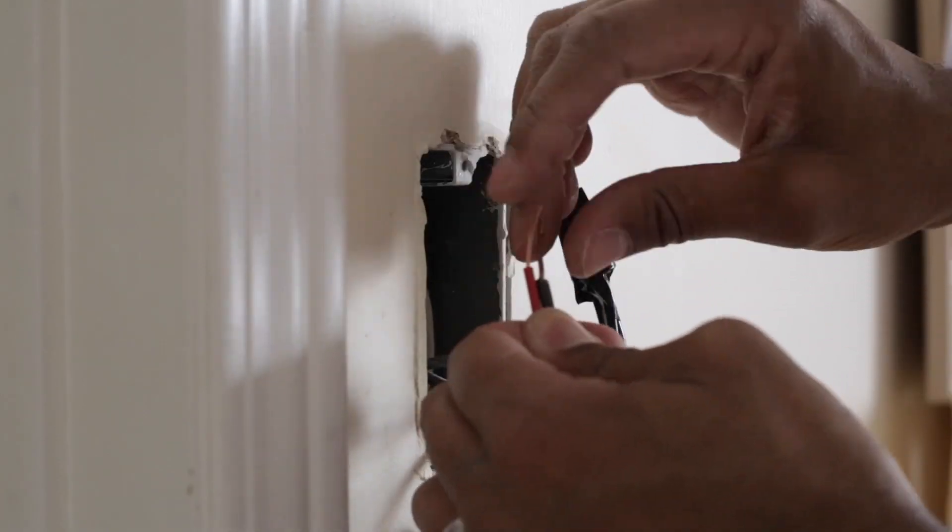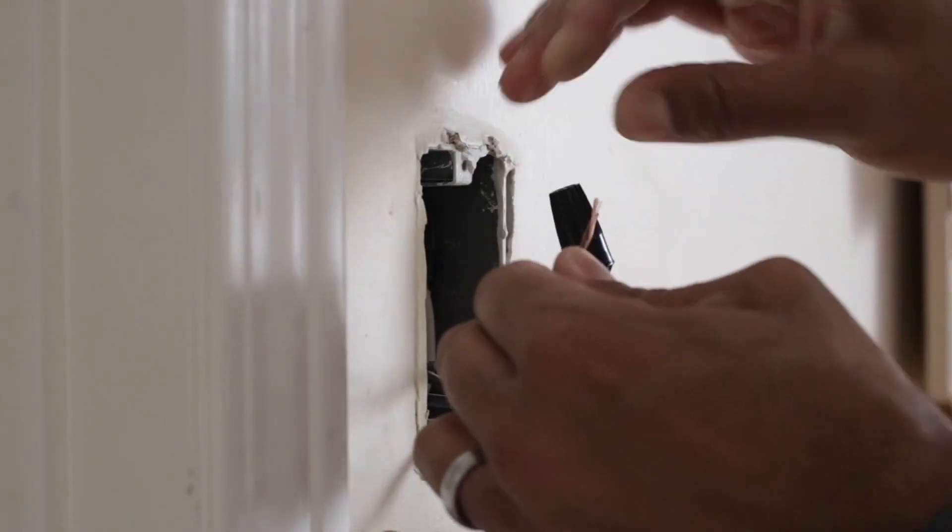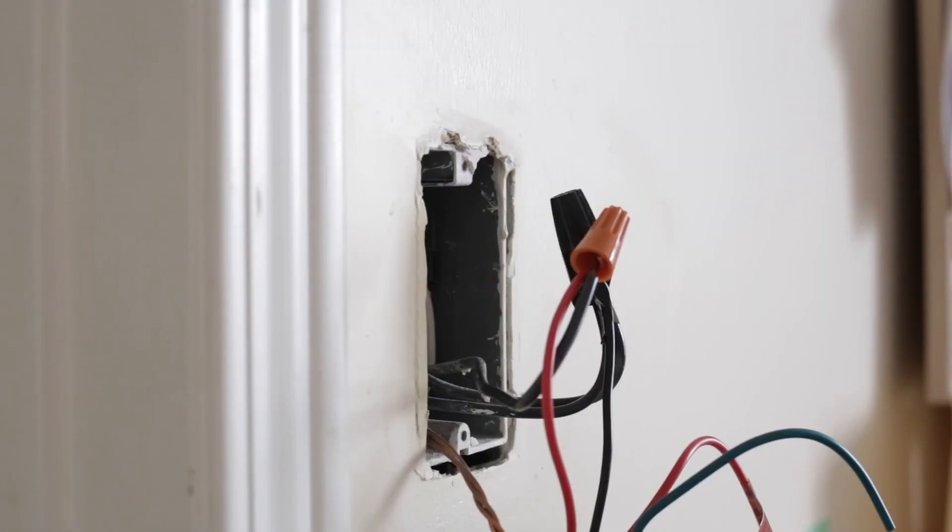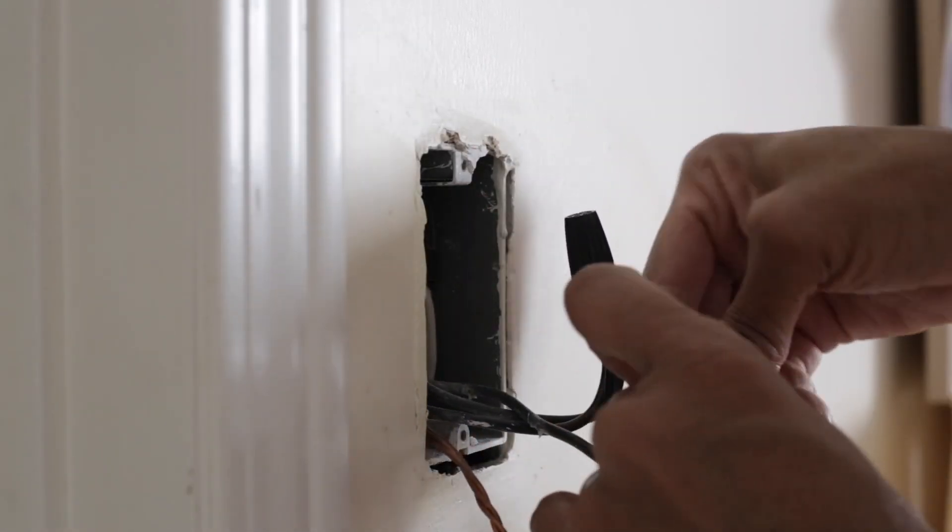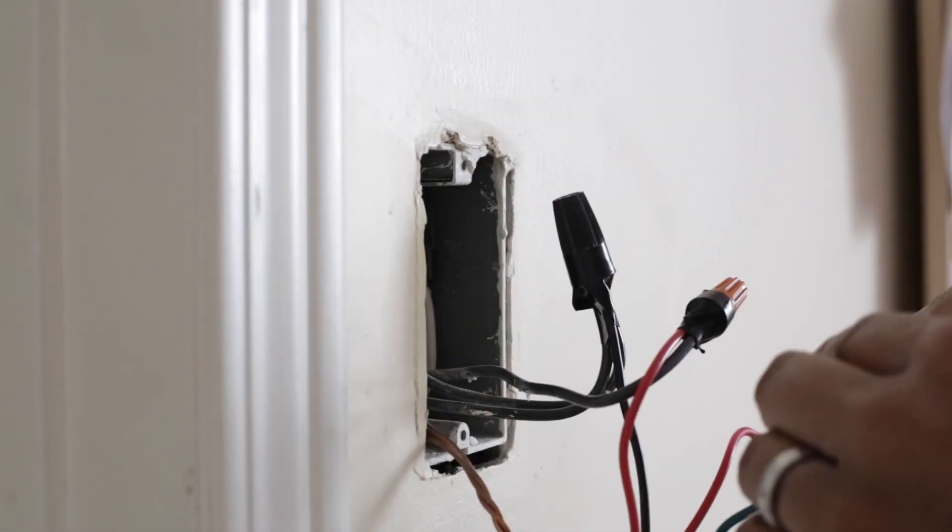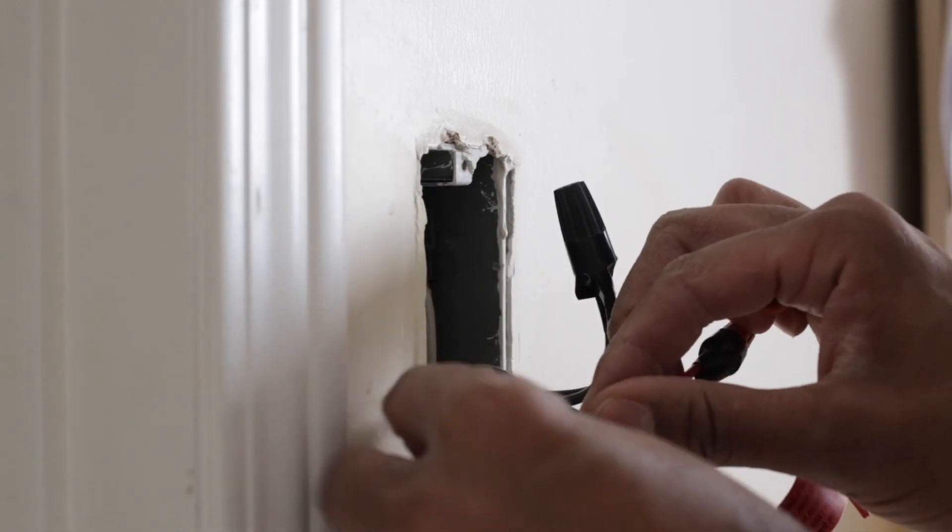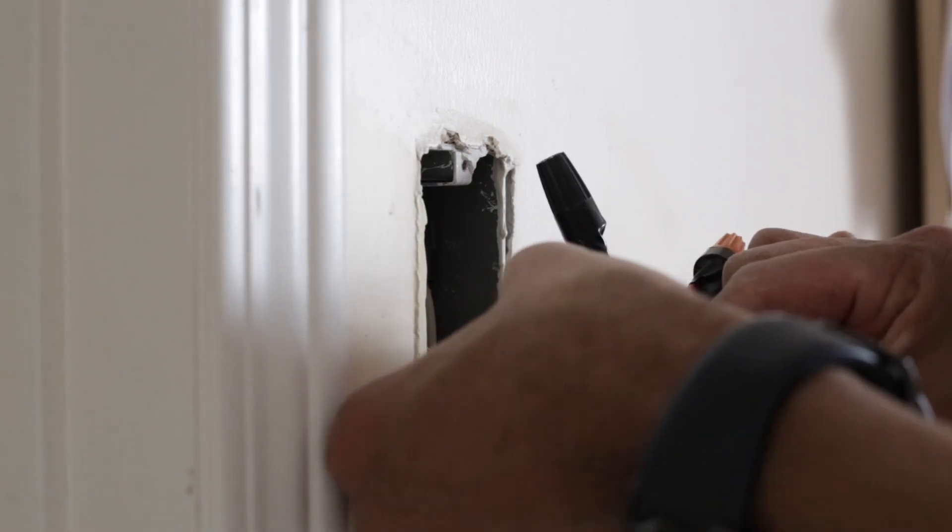Up next, I'm gonna connect the load wires. This is the wire that's gonna bring electricity to the light when you hit that switch. We're gonna connect this ground wire to, even though the last switch didn't have a ground wire connected, this switch clearly asked for it, so we're gonna do it.